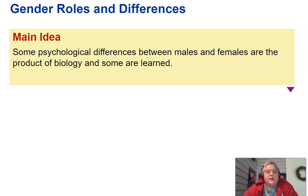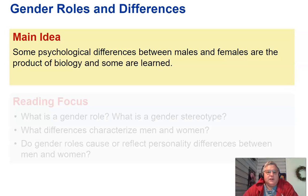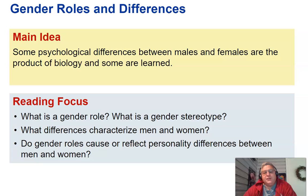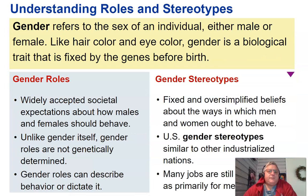The main idea of this section is that some psychological differences between males and females are the product of biology, and some are learned. The key questions you should be able to answer are: What is a gender role and what is a gender stereotype? What differences characterize men and women? And do gender roles cause or reflect personality differences between men and women?